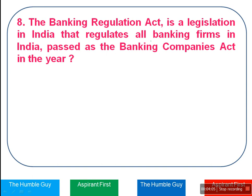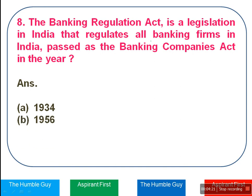Next question: The Banking Regulation Act is legislation in India that regulates all banking firms. In which year was the Banking Companies Act passed? This is an important act — you must remember it. The options are 1934, 1956, 2013, or 1949. The right answer is Option D — 1949. So in 1949, nationalization was also passed and the Banking Regulation Act was passed.